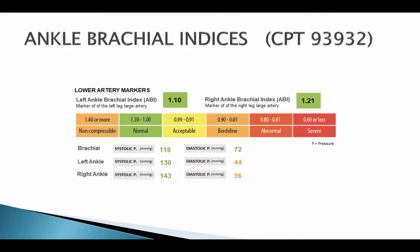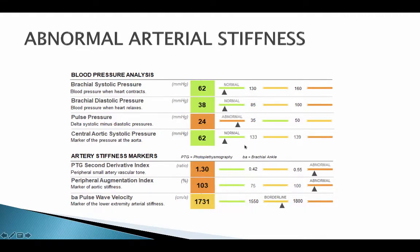The ankle brachial indices are measured for the left and right lower extremity. A range of 0.9 to 1.39 is normal, and this person has normal ABIs. However, if they had hardening of the arteries, it would be picked up — as shown on this slide — where stiffness could lead to an abnormal, normal, or high read on the ABI exam.